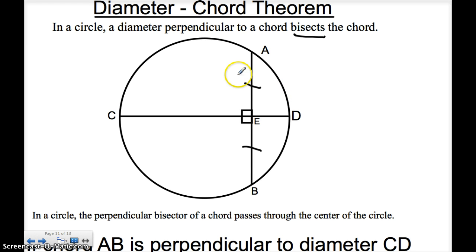What's that mean in practice? Well, if I knew that AE was 5, then I know EB would also be 5, because CD cut it in half.